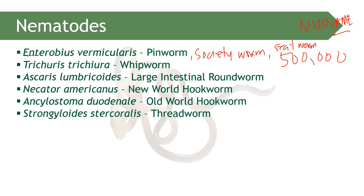Moving forward, we have Ascaris lumbricoides — the giant intestinal roundworm of man. You've heard about Ascaris lumbricoides from biology class. If you've seen an earthworm, Ascaris lumbricoides is similar — pinkish or creamy in color. The size of Ascaris lumbricoides resembles an earthworm, and it resides inside your body.